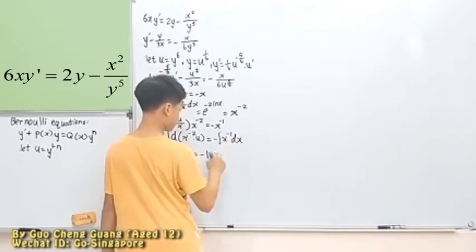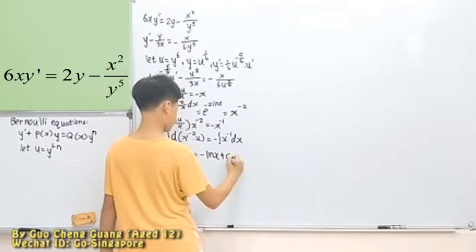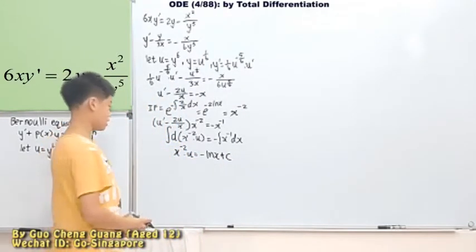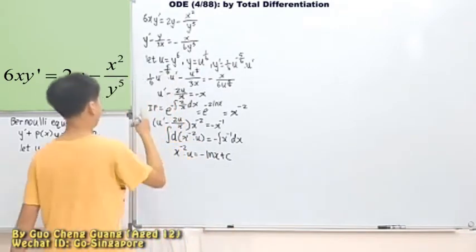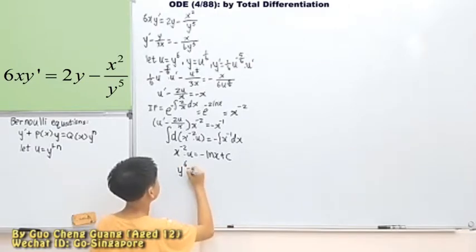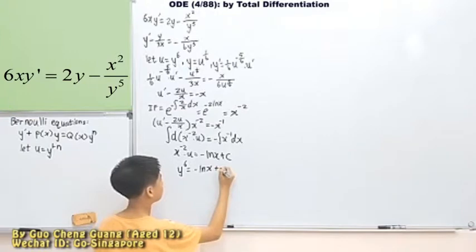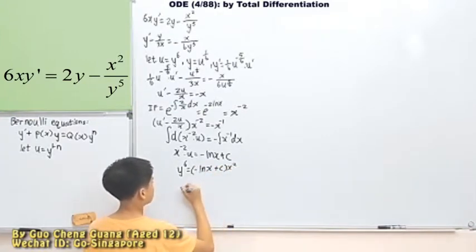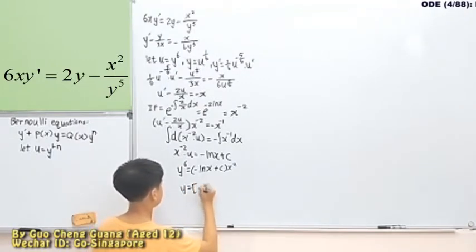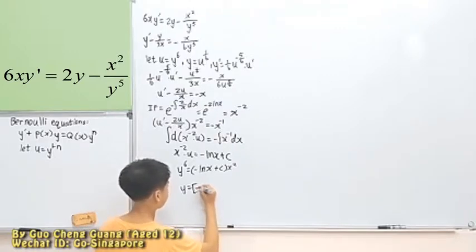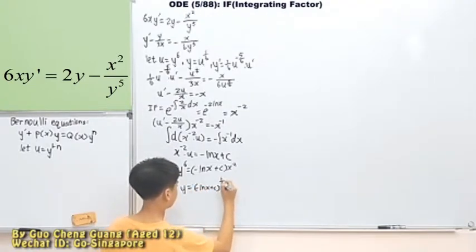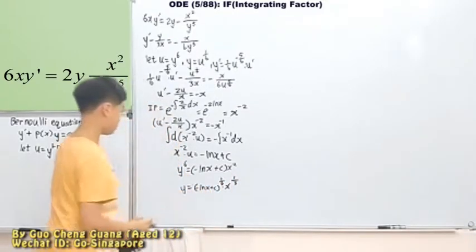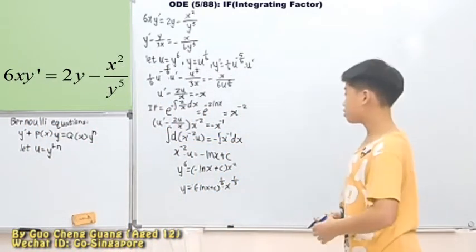So at this part, it's actually a 1 over x, so that's why it becomes ln x. Then after that here is plus c. Then you can times this on both sides. Well, at the same time, you can change this u into the y. So at this part, you can also choose to find out what y is. So what you'll get will be like this.